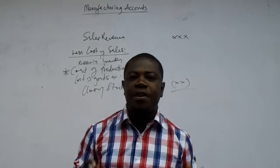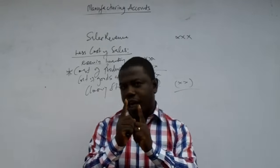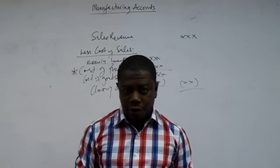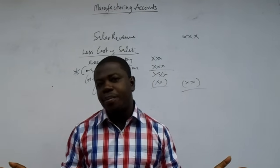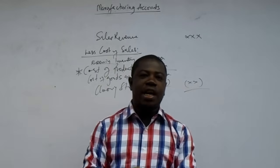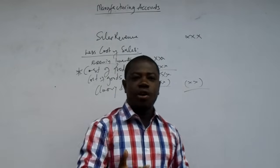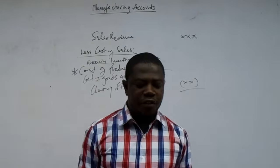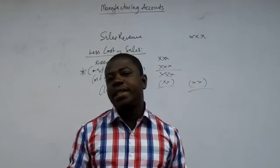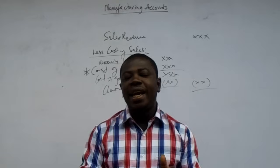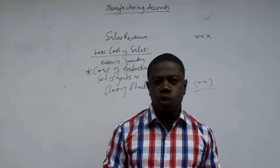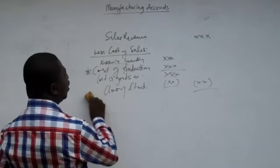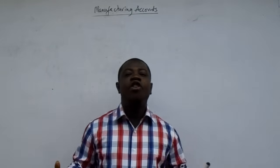We prepare a manufacturing account, and the purpose of preparing a manufacturing account is to ascertain the cost of production, which we will use to prepare the final accounts. Manufacturing companies may not have any external purchases of finished goods, so if you don't prepare the manufacturing account to ascertain the cost of production, you cannot prepare the final account, because cost of production is going to replace what you knew as purchases inside your final account.